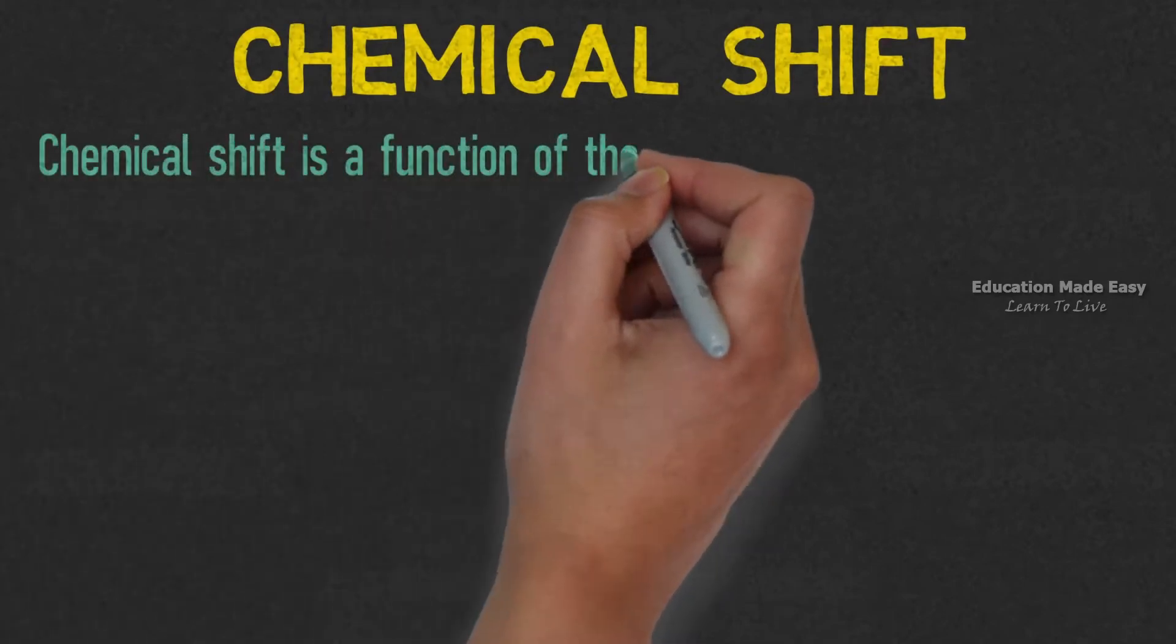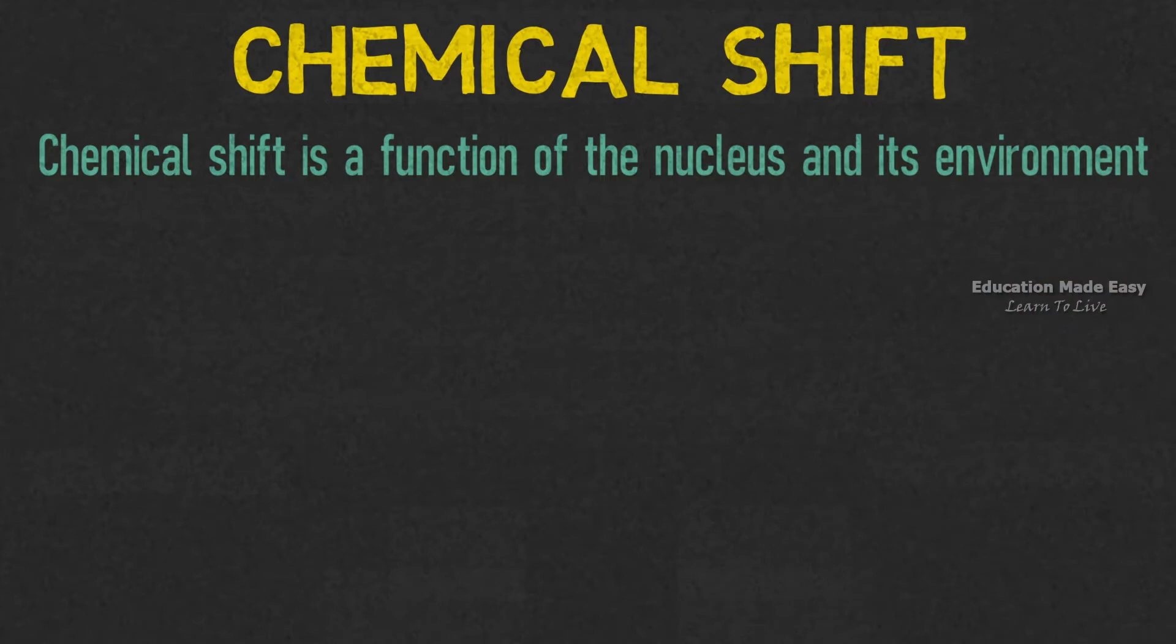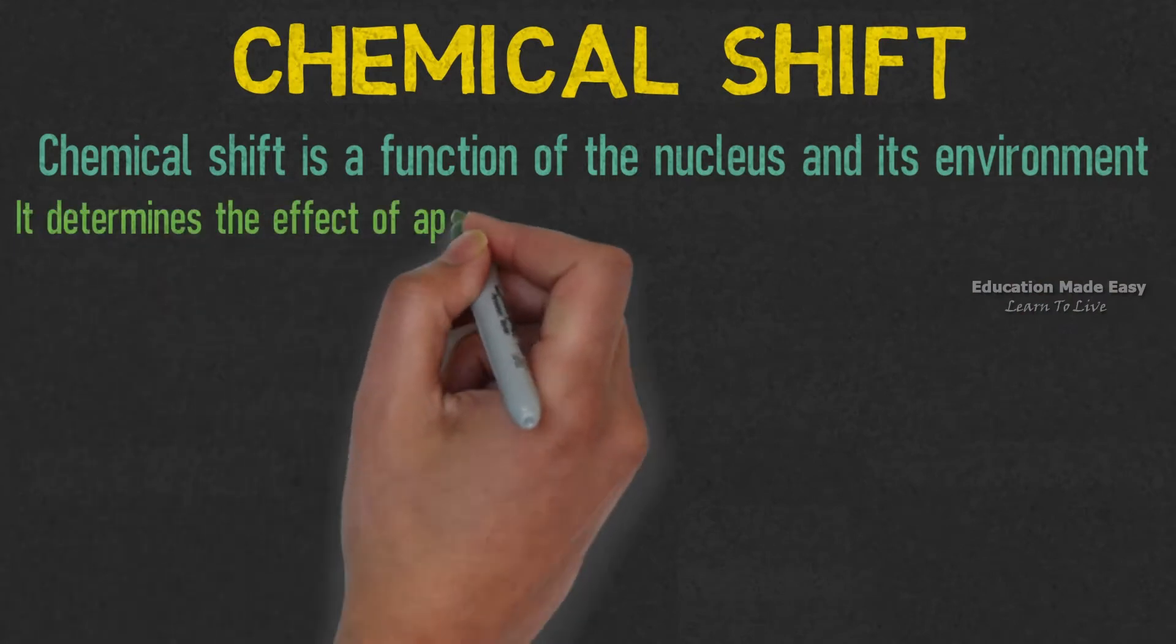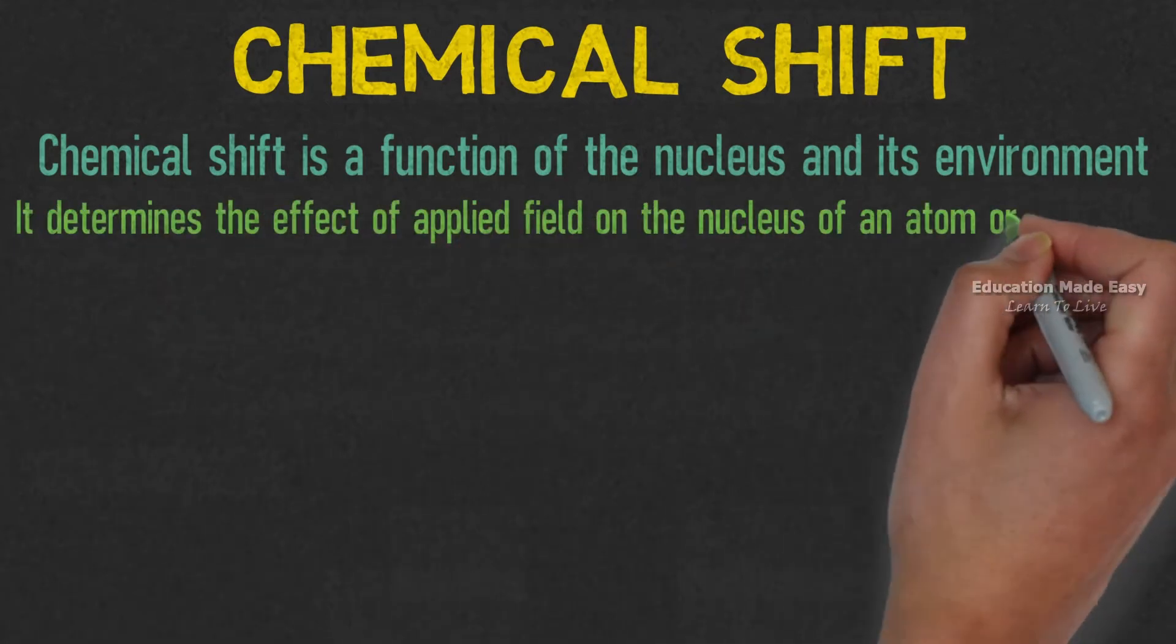Chemical shift is a function of the nucleus and its environment. It determines the effect of applied field on the nucleus of an atom.